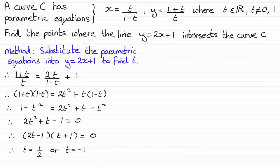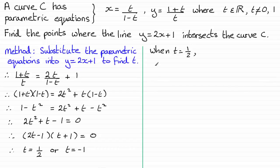Now that I have my t values, I substitute them back into the parametric equations. When t equals a half, the x coordinate is a half divided by one half, which gives x equals 1. For y, we get 1 plus a half — that's 1 and a half — divided by a half, which gives y equals 3.